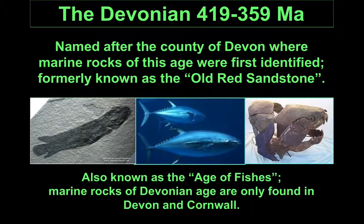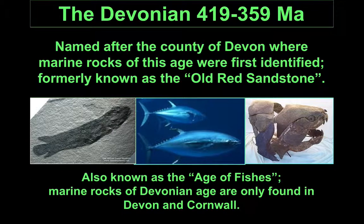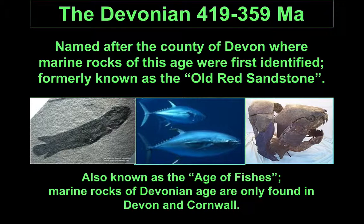The Devonian, often known as the Old Red Sandstone because of fairly extensive desert deposits — although ironically those desert deposits are found everywhere other than Devon — shows very rapid evolution of fish.